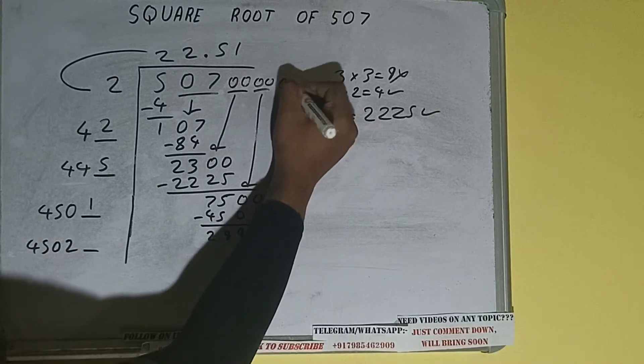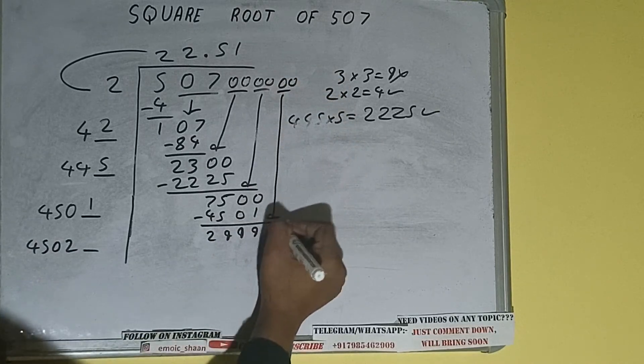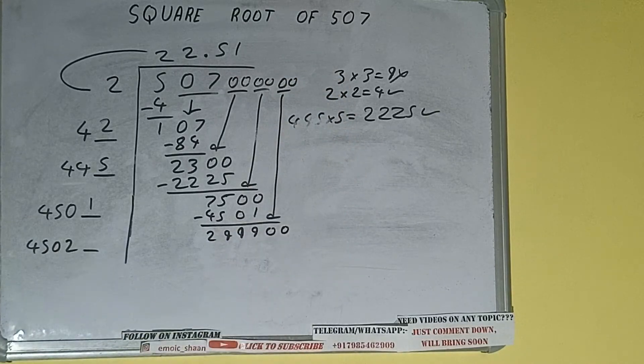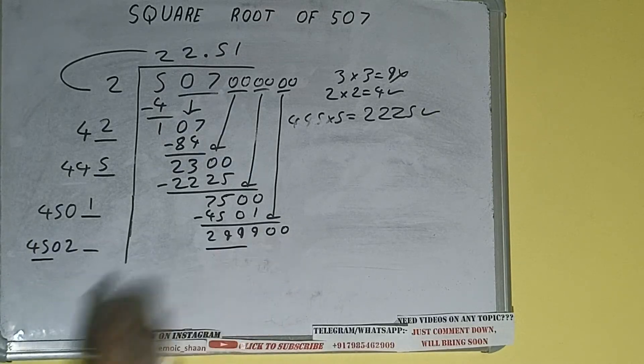And this number we need to make it big. So bring the next pair of zeros down and it will be 29,900. Compare this 45 and 299. So 45 six times is 270, so we can try 6 times.